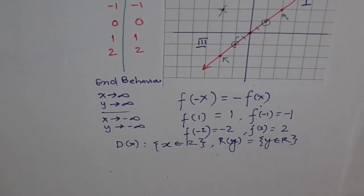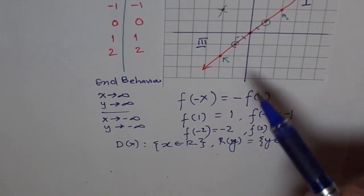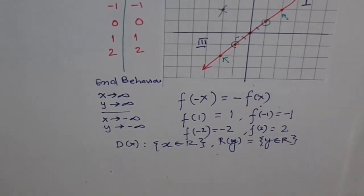It doesn't have any turning point. It goes through origin. And x and y intercepts are at origin. So these are the properties of our line. Thank you.